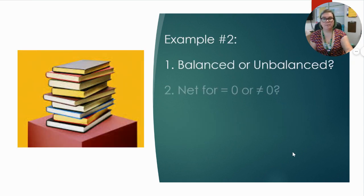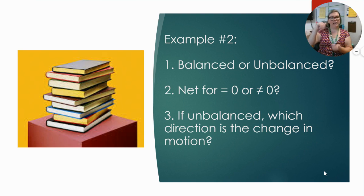Example two, same questions. We've got books sitting on a table. Is this balanced or unbalanced? Well, they're not moving, so we conclude it's balanced forces, right? Everything in different directions is all balanced. Net force, is it going to be zero or not zero? Again, since it's not moving, we have balanced forces, our net force is going to be zero. And we can skip number three since this is balanced forces.